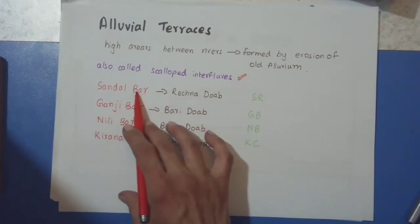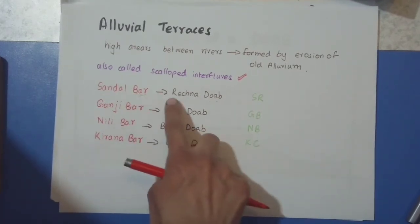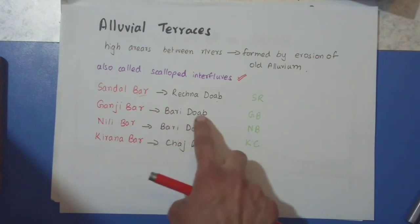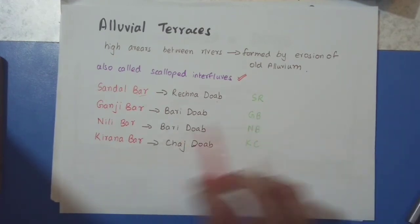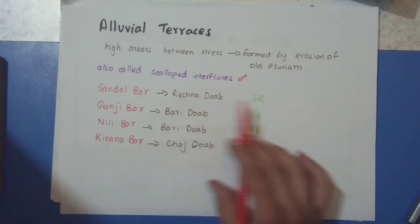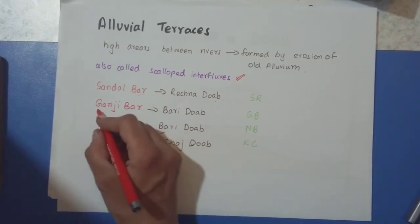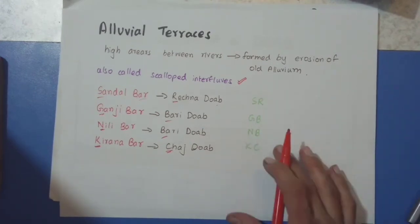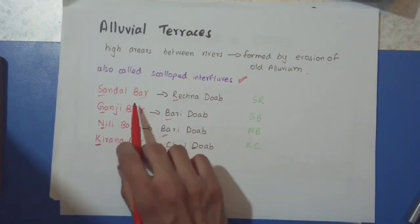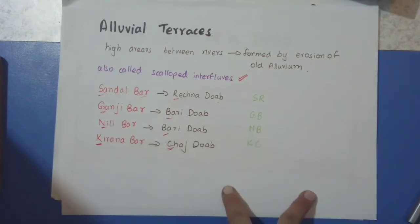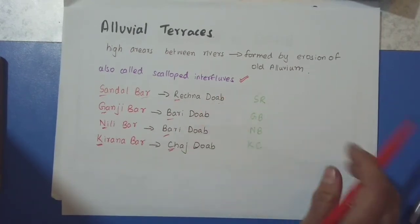Where are they located? The Sandal Bar is located in the Rachna Doab. Ganji Bar is located in the Bari Doab. Neelie Bar is also located in the Bari Doab. And Kirana Bar is in the Chaj Doab. You can form abbreviations to memorize: SR, GB, NB, KC. But before forming abbreviations, you have to be thorough with the names of these Doabs and bars so you don't get confused. Bars are alluvial terraces — raised areas between rivers formed within the Doab, and each Doab has a specific name.